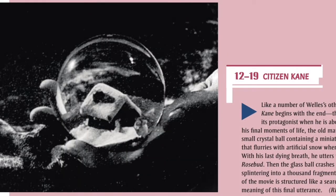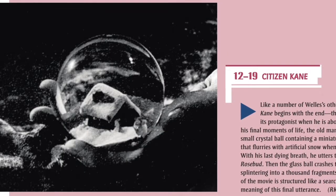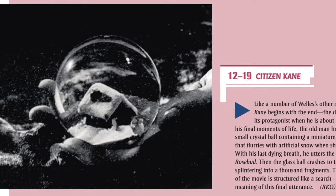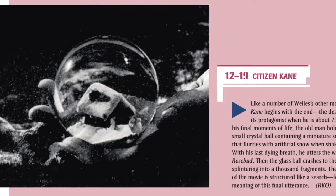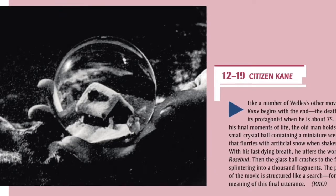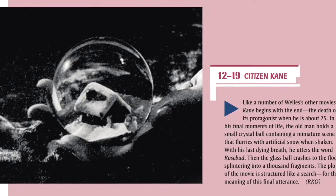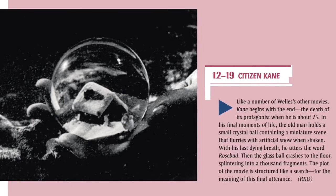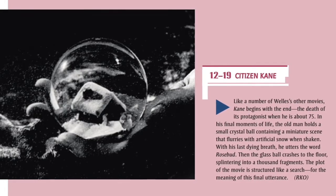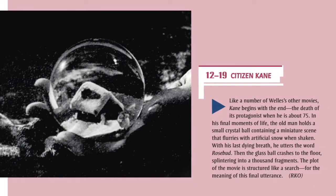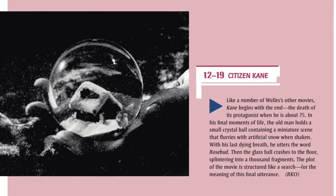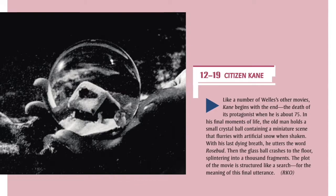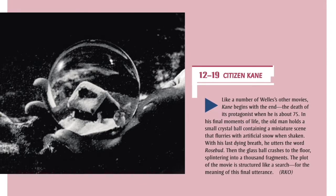12-19: Citizen Kane globe. Like a number of Welles' other movies, Kane begins with the end — the death of its protagonist when he is about 75. In his final moments of life, the old man holds a small crystal ball containing a miniature scene that flurries with artificial snow when shaken. With his last dying breath, he utters the word 'Rosebud.' Then the glass ball crashes to the floor, splintering into a thousand fragments. The plot of the movie is structured like a search for the meaning of this final utterance.